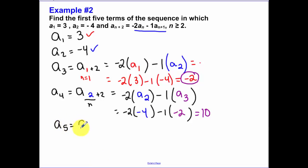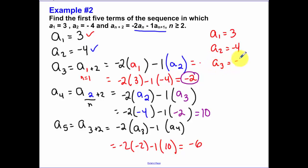Our fifth term is our a sub 3 plus 2. Because 3 plus 2 gets me 5. And that 3 is going to tell me my n. So I have negative 2 times our third term minus 1 times by the fourth term. Plugging that in. a sub 3 was negative 2. a sub 4 was 10. And so then we get a negative 6. Now I'm not going to worry about showing you the pattern like I did the last time. But let me just write out what our five terms are so that you guys can see it. So that's what all of our terms look like.